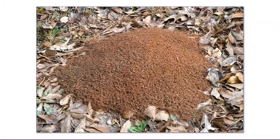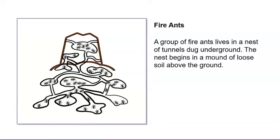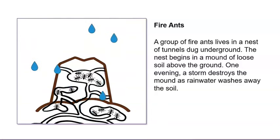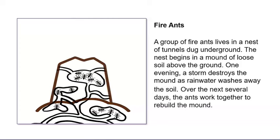What are we looking at now? A pile of soil? Well, yeah, actually — but there's something else in there too. This is a photograph of one of the world's largest animal groups. This is a fire ant mound. A group of fire ants lives in a nest of tunnels dug underground. The nest begins in a mound of loose soil above the ground. One evening, a storm destroys the mound as rainwater washes away the soil. Over the next several days, the ants work together to rebuild the mound.